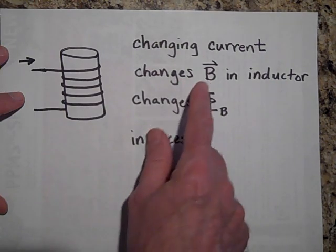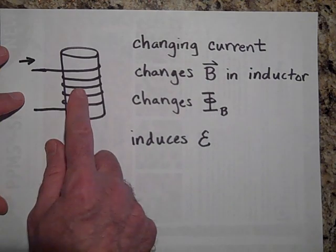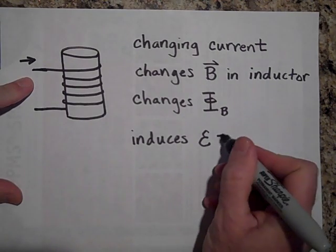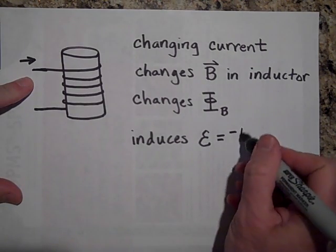By changing the magnetic field, you're also changing the magnetic flux. And we know from Faraday's law that if we change the magnetic flux, then we induce an EMF at this rate.